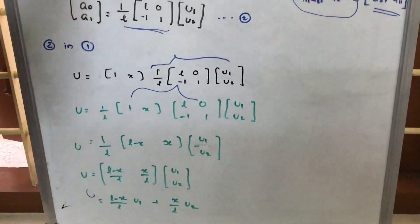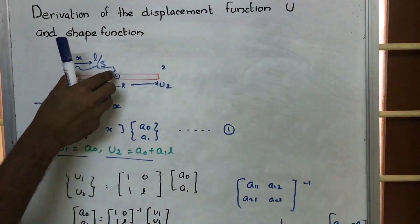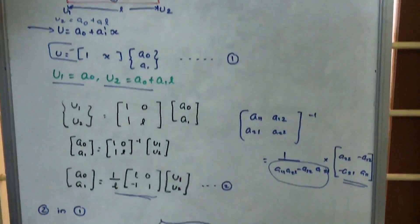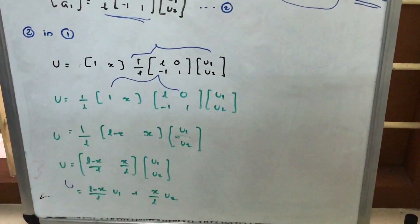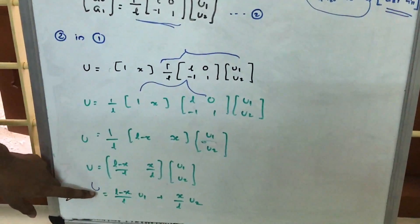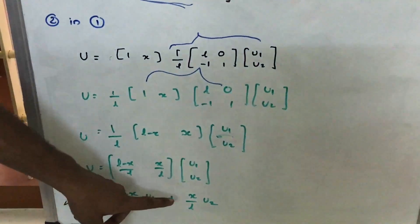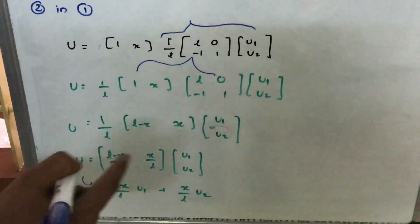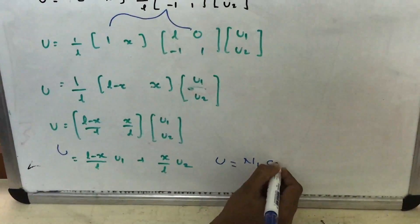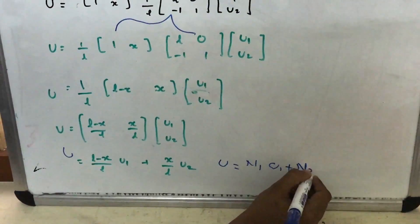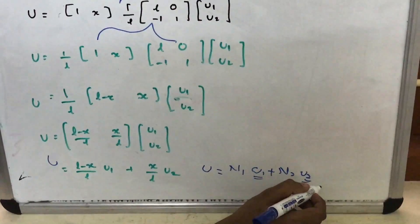Now if we know the distance x, for example x equal to L/3, we substitute L/3 in place of x and we get the displacement at that particular point. So we have obtained the displacement at any variable point by the equation u = ((L-x)/L)*u1 + (x/L)*u2. We can write this as u = N1*u1 + N2*u2, where u1 and u2 are the displacements at the ends.